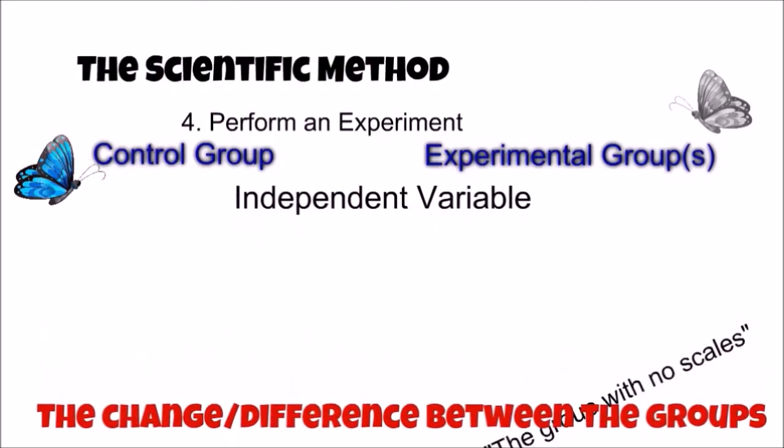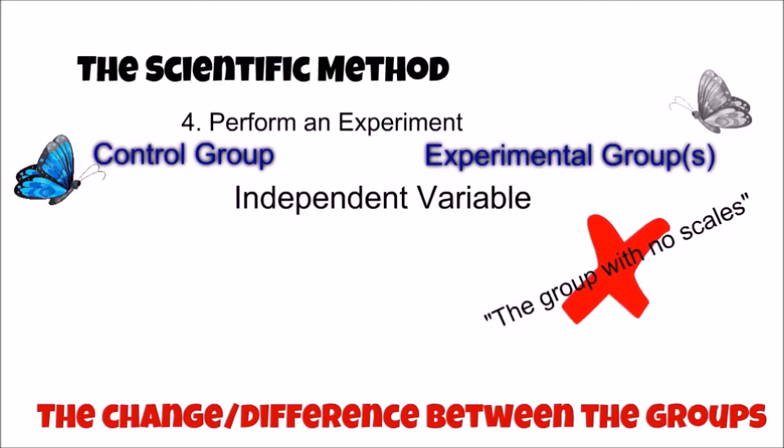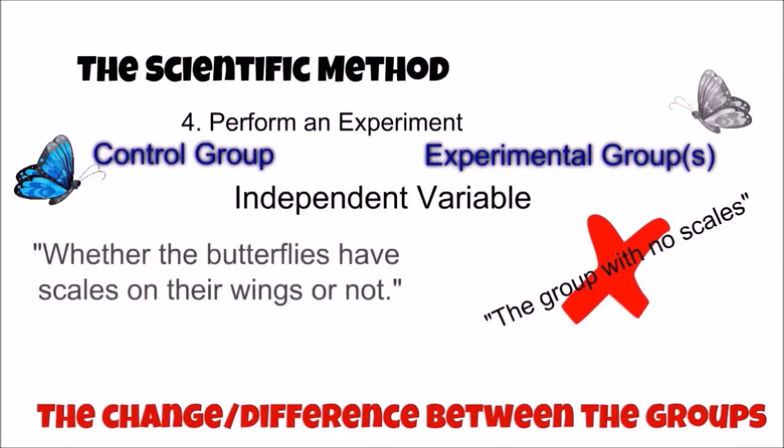An easy mistake would be to say the butterfly group with no scales is the independent variable. This statement is incorrect because it does not state the difference between the groups. It only describes the no-scale group. Again, the independent variable states the difference between the experimental and control groups, which for this experiment is best stated as whether the butterflies have scales on their wings or not.